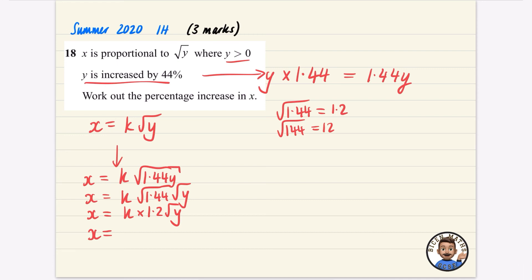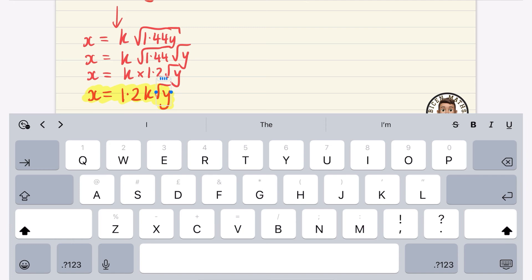And if I write that in a slightly different order, this is 1.2 K root Y. So this is what it was originally, it was X equals K root Y. And now we've said that X is equal to 1.2 K root Y. I don't know why I've got that all jumping up here.